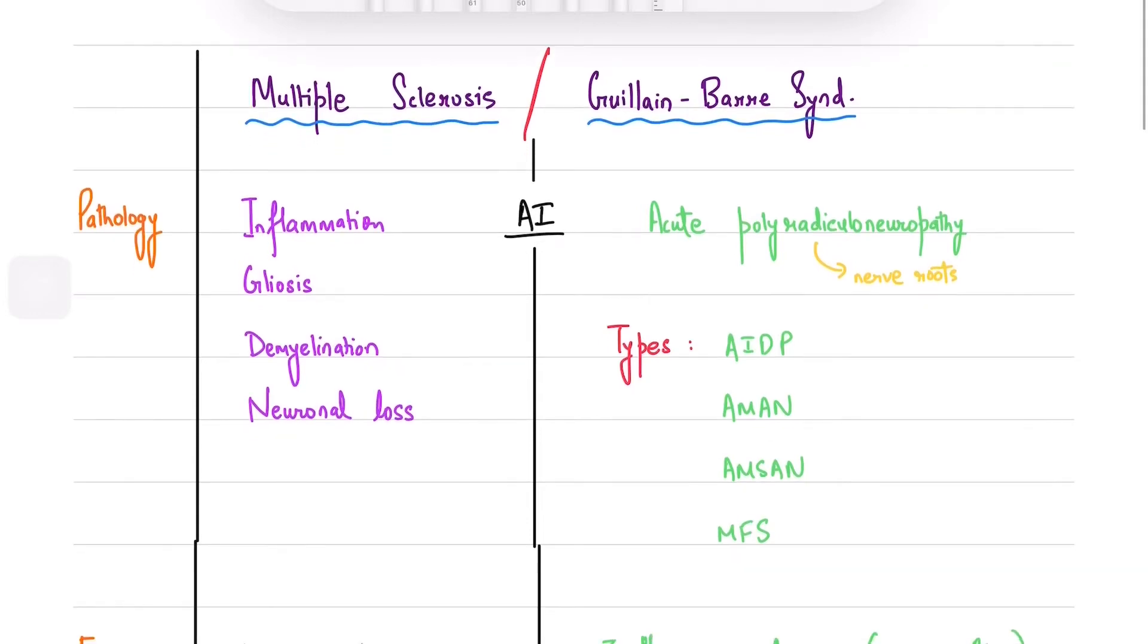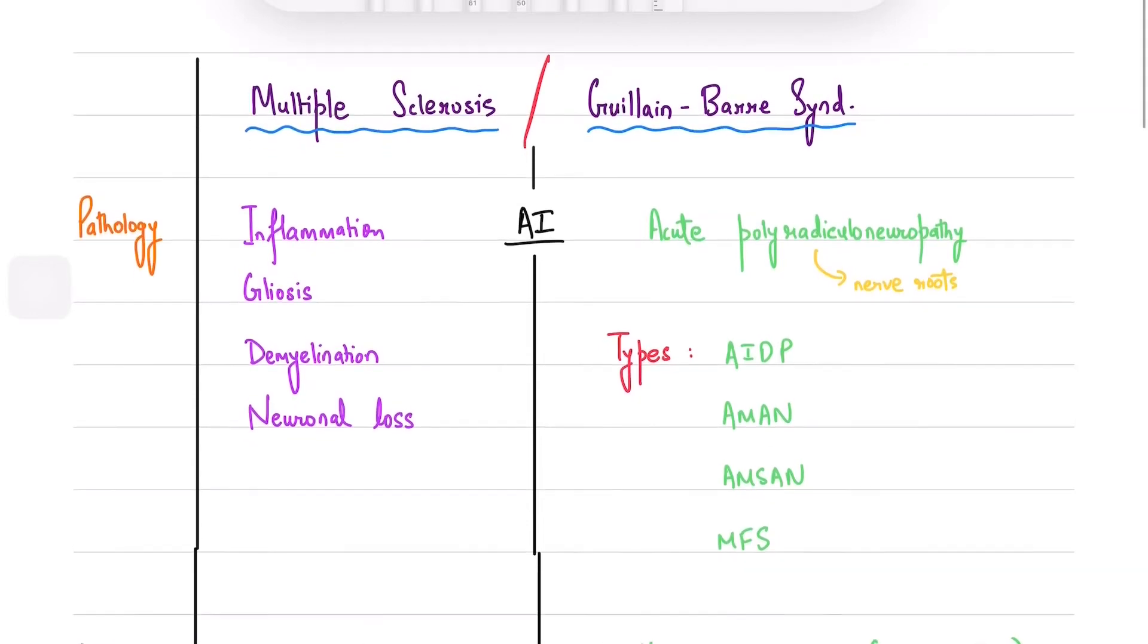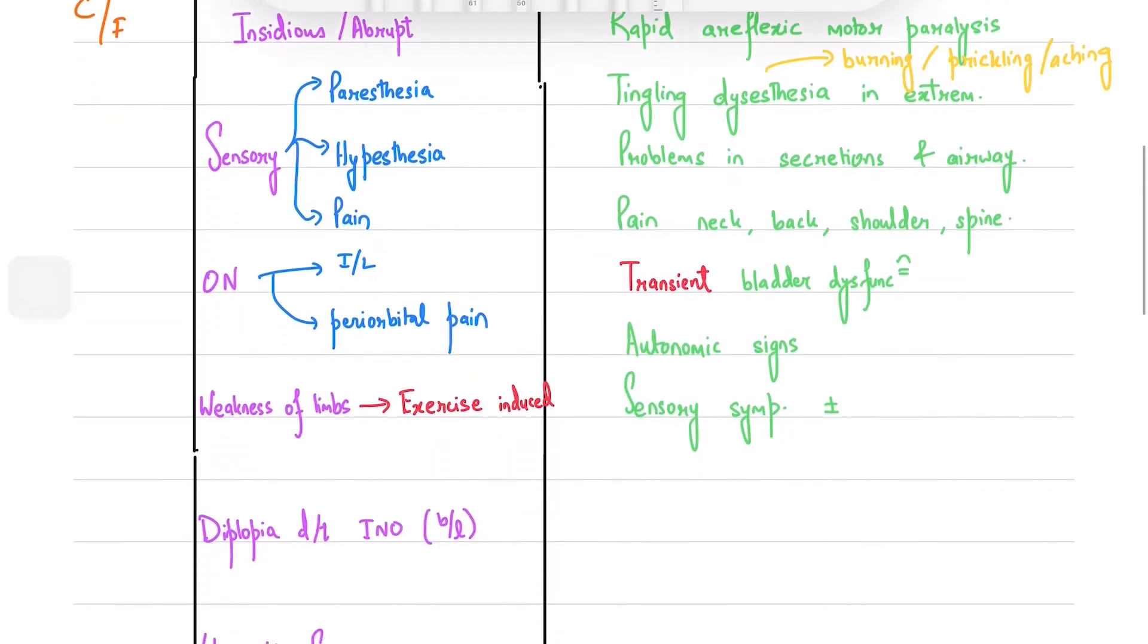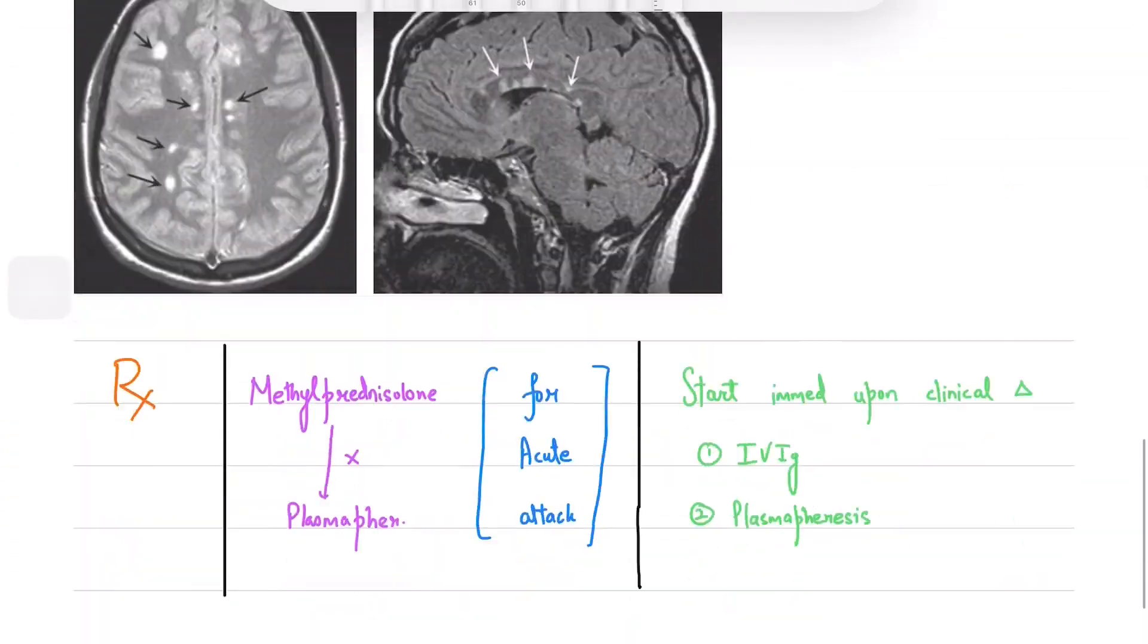Hello everyone, welcome back to another episode of Harrison explained. Today we are going to discuss the differences between multiple sclerosis and Guillain-Barré syndrome.